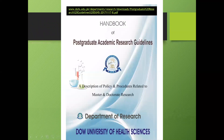The first thing students need to do is go online. I have given you the link at the top. Dow University of Health Sciences — the OREC, that is the Office of Research Integrity and Commercialization and the Research Office — has created an official handbook of postgraduate academic research guidelines. It covers research for PhD or master programs, and gives all guidelines from creating a synopsis or research protocol, how to submit it, how to get ethical committee approval, and what are the guidelines for writing a research thesis or dissertation as per OREC of Dow University.